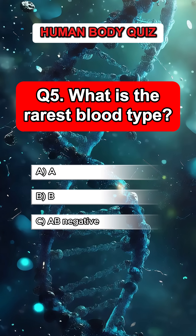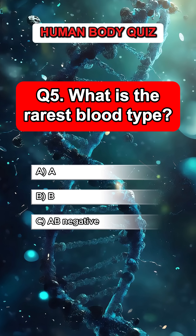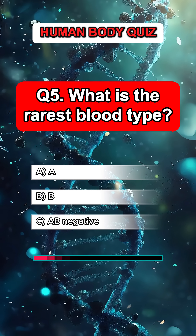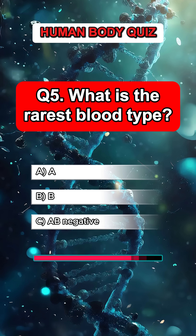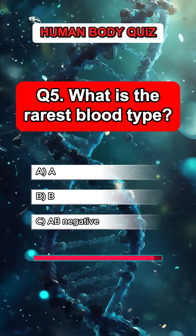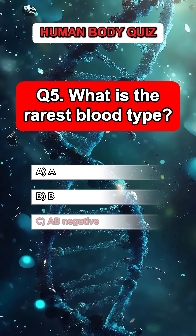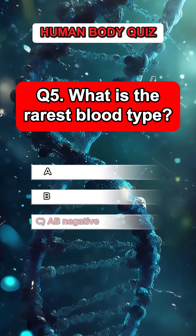Question 5. What is the rarest blood type? Answer C. AB negative.